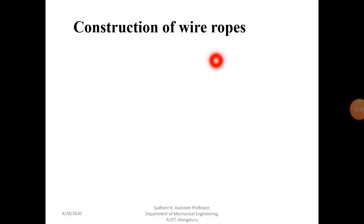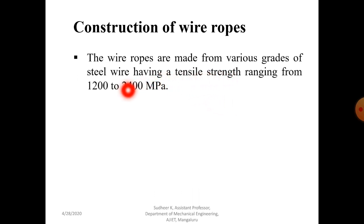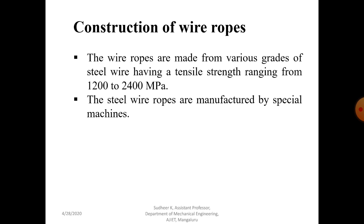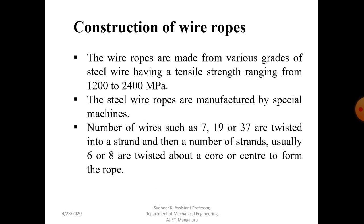Now coming to the construction of wire ropes. Wire ropes are made from various grades of steel wire having a tensile strength ranging from 1200 to 2400 MPa. Steel wire ropes are manufactured by special machines. A number of wires — such as 7, 19, or 37 — are twisted into a strand, and then a number of strands, usually six or eight, are twisted about a core or center to form the rope.